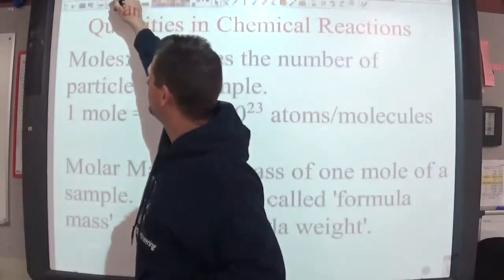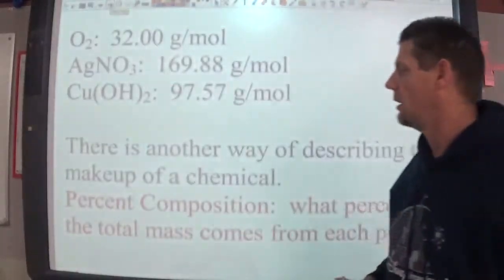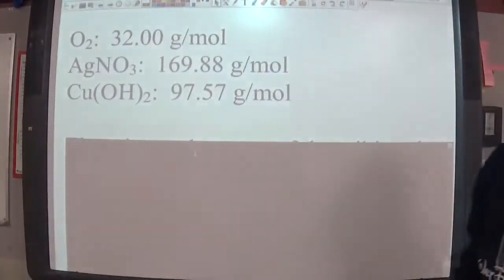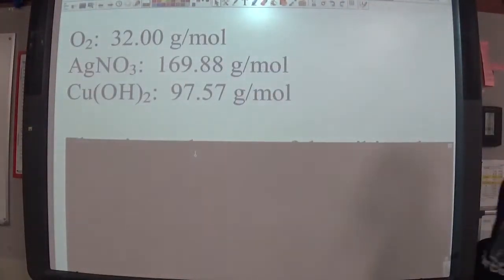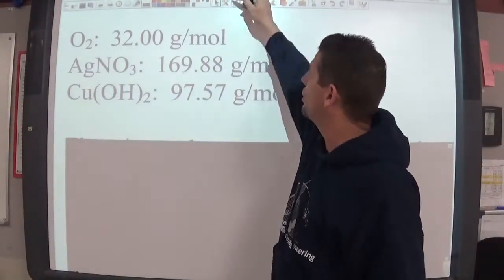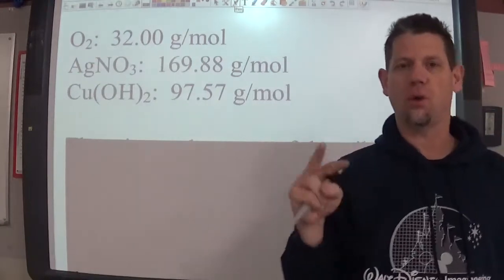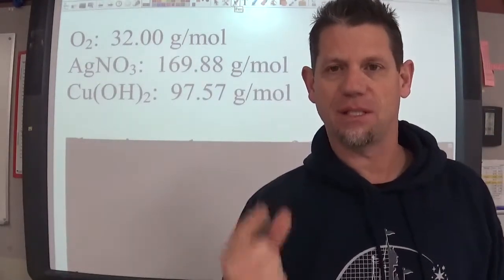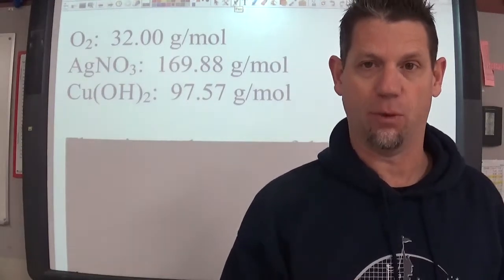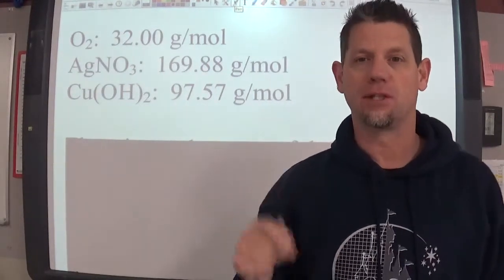So for example, I have three things here on the board for you. Let's actually do this for a second. 32 grams per mole for oxygen. So notice that oxygen is O2. As O2, that means there are two oxygen atoms that have been stuck together to make an oxygen molecule. So its molar mass of one mole of oxygen gas is 32 grams per mole.